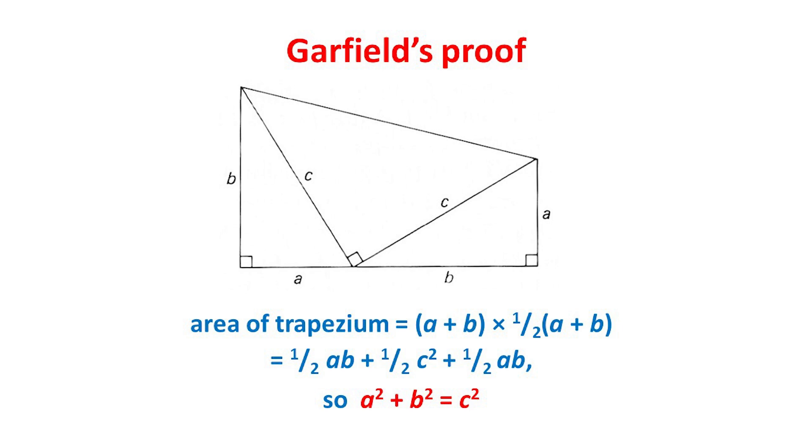Let's now calculate some areas. Now the area of any trapezium is the product of its base and its average height, which here is a plus b, that's the base, times a half of a plus b, which is the average height.